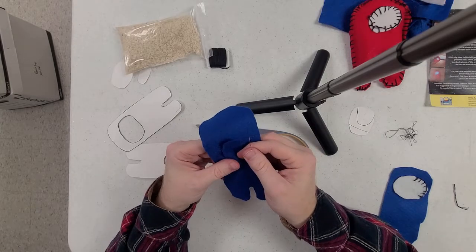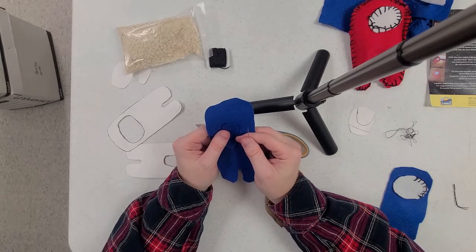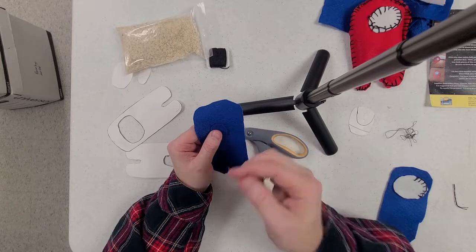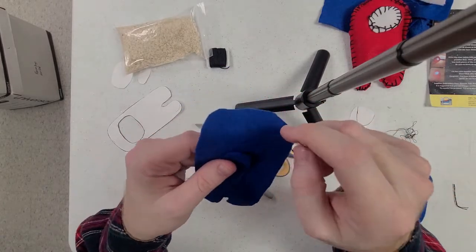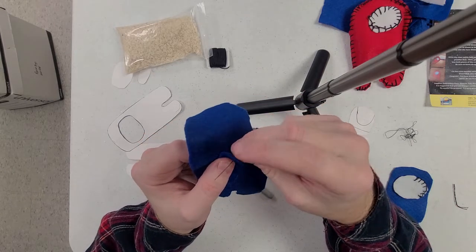So the stitch we're going to be using today is called a blanket stitch. You can find this on most of the fleece blankets out there. It's a very popular stitch for that and it's very simple to do. Before I get started, I'm going to start by sewing on the pack since I already started my visor.